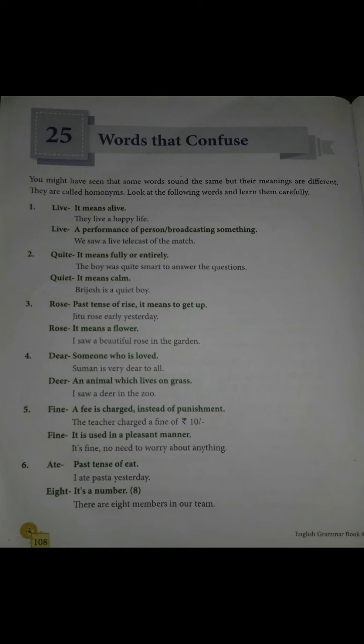Number 4 is 'dear' — someone who is loved, someone very dear to you. When you write a letter to your friends or parents, you write 'Dear Mummy' or 'Dear Papa.' For example: 'Someone is very dear to all.' Next is 'deer' — an animal which lives on grass. For example: 'I saw a deer in the zoo.'